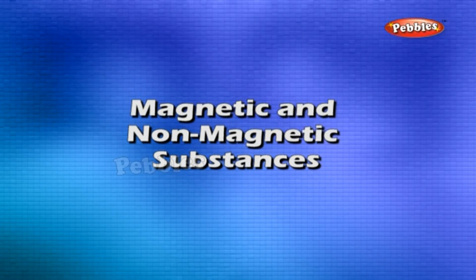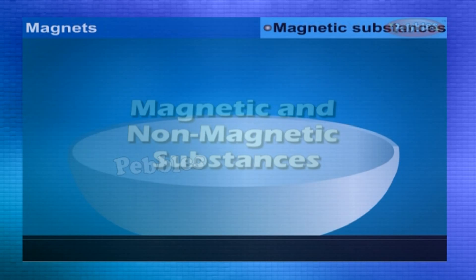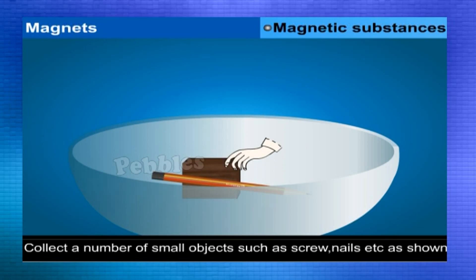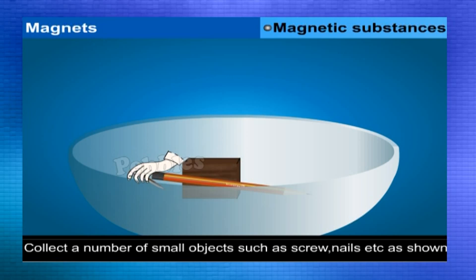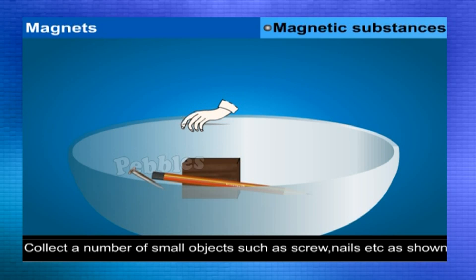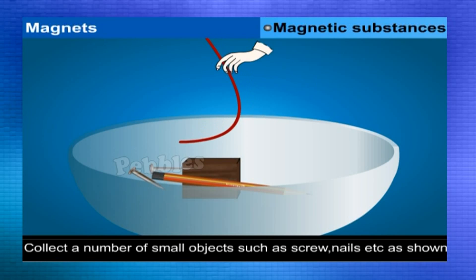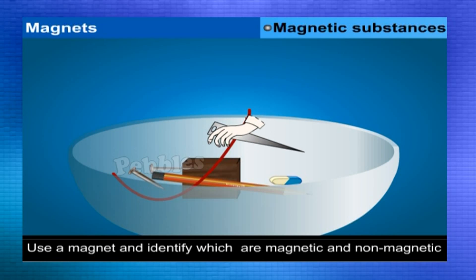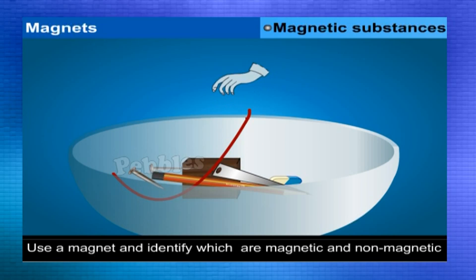Collect a number of small objects such as brass screw, copper wire, iron nail, sewing needle, paper clip, eraser, pencil, shaving blade, plastic scale, glass lens, postcard, safety pin, spoon, cork, rubber band, toothbrush, etc. Use a magnet and identify which of these substances are magnetic and which are non-magnetic in nature.